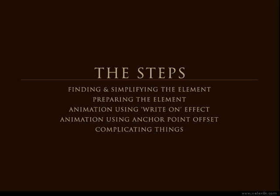The basic steps for this piece are: finding and simplifying the element, preparing or cutting it apart into its individual pieces, then animating it in After Effects using the write-on effect, offsetting the anchor point and animating its scale for some of the leaves, and then mirroring everything so that it looks more complicated than it really is. If you know After Effects pretty well you can probably figure it out just from those steps. If not, follow along for the next 20 or so minutes.